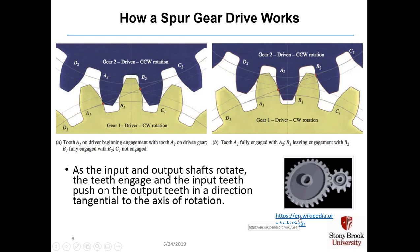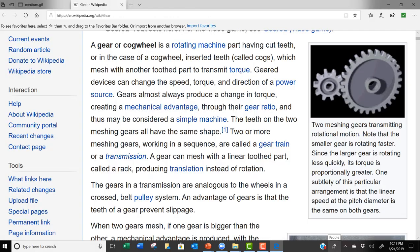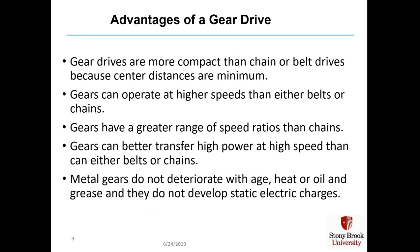Let's take a look at another GIF file — note that the smaller gear is rotating faster than the larger gear, and thus the larger gear will have more torque on it. Here are some advantages of a gear drive: gear drives are much more compact than chain or belt drives, they can operate at higher speeds, have a greater range of speed ratio, and can transfer high mechanical power at high speed more efficiently. The metal gears do not deteriorate with age, heat, or oil.